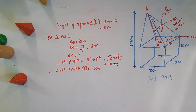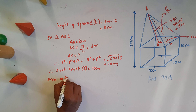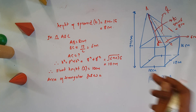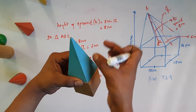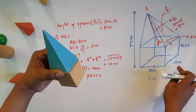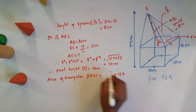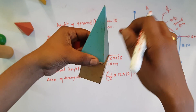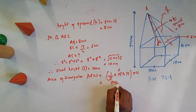Therefore, the slant height of the pyramid L equals 10 cm. Now, the area of the 4 triangular faces: the base is 2L equals 12 cm and the slant height is 10 cm. Area of 4 triangular faces equals 4 times one-half times base times height equals 4 times 60 equals 240 cm².